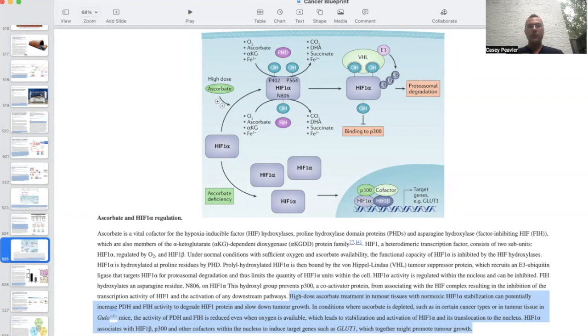HIF-1 alpha associates with HIF-1 beta, P300, and other cofactors within the nucleus to induce target genes such as GLUT1, a glucose transporter that would upregulate glucose entry into the cell, which can feed forward the Warburg effect, which together might promote tumor growth.